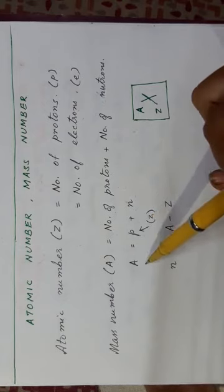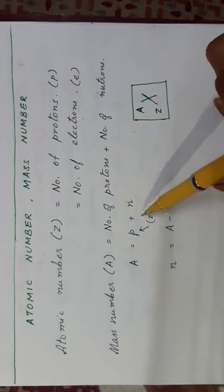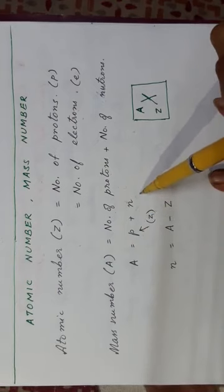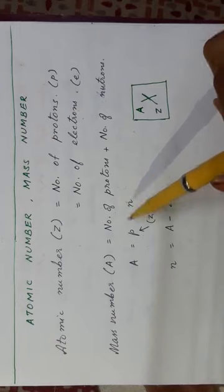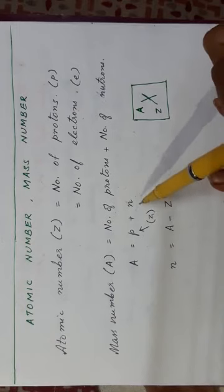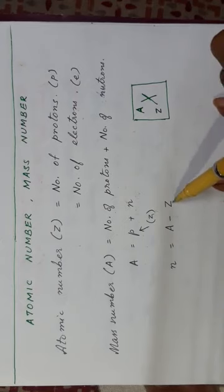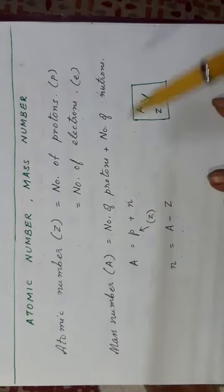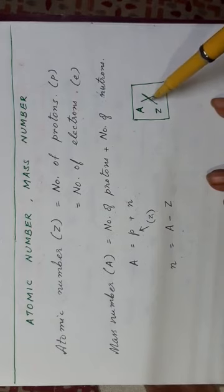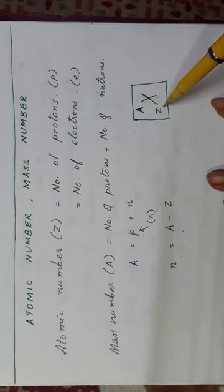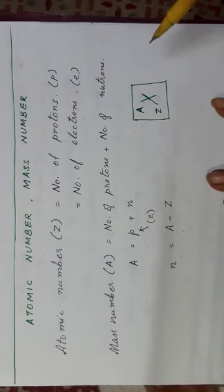Now suppose we know the mass number and the atomic number. Then we can get the number of neutrons by subtracting Z from A. Now this is an element X. Now how do we represent mass number, atomic number and the symbol of the element?